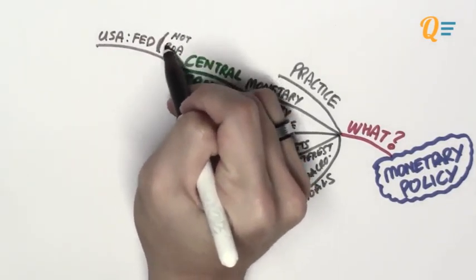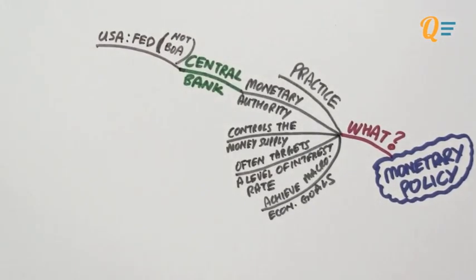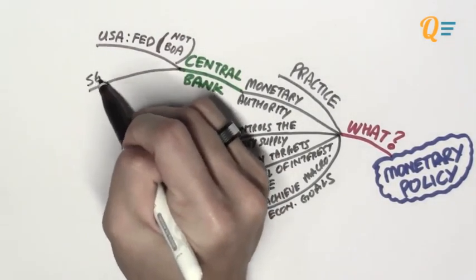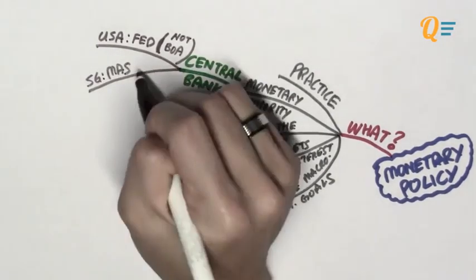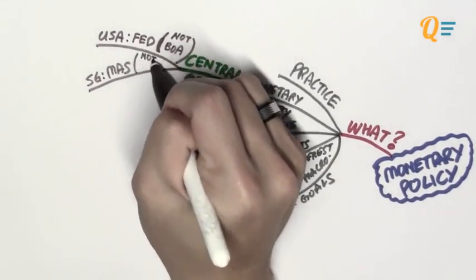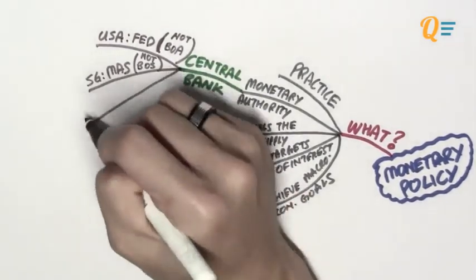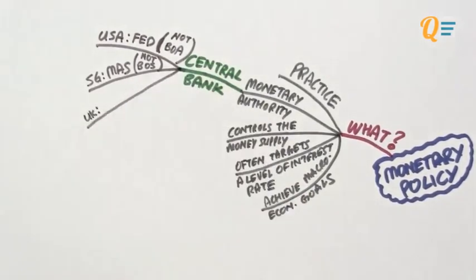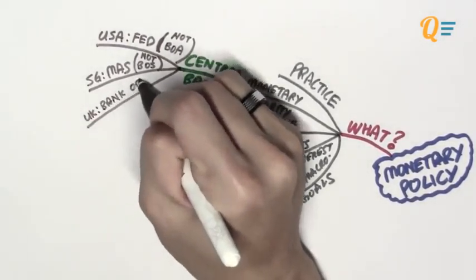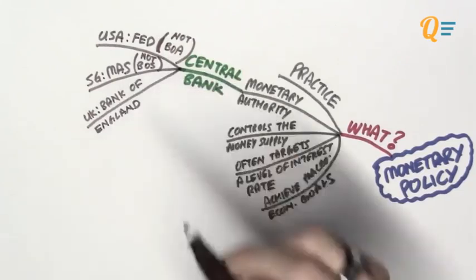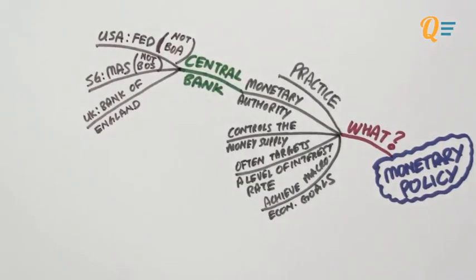The Bank of America is just one of the regular banks doing consumer, investment, and commercial banking. In Singapore, the central bank is known as the Monetary Authority of Singapore — not the Bank of Singapore, which is the private banking arm of OCBC Bank. And in the United Kingdom, the central bank is the Bank of England.